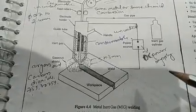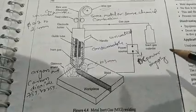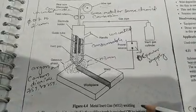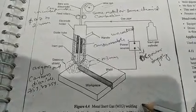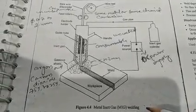Now dear students, see the simple construction of the metal inert gas welding process. In the metal inert gas welding process (MIG), it is just similar to the TIG gas welding process, that is tungsten inert gas welding process.